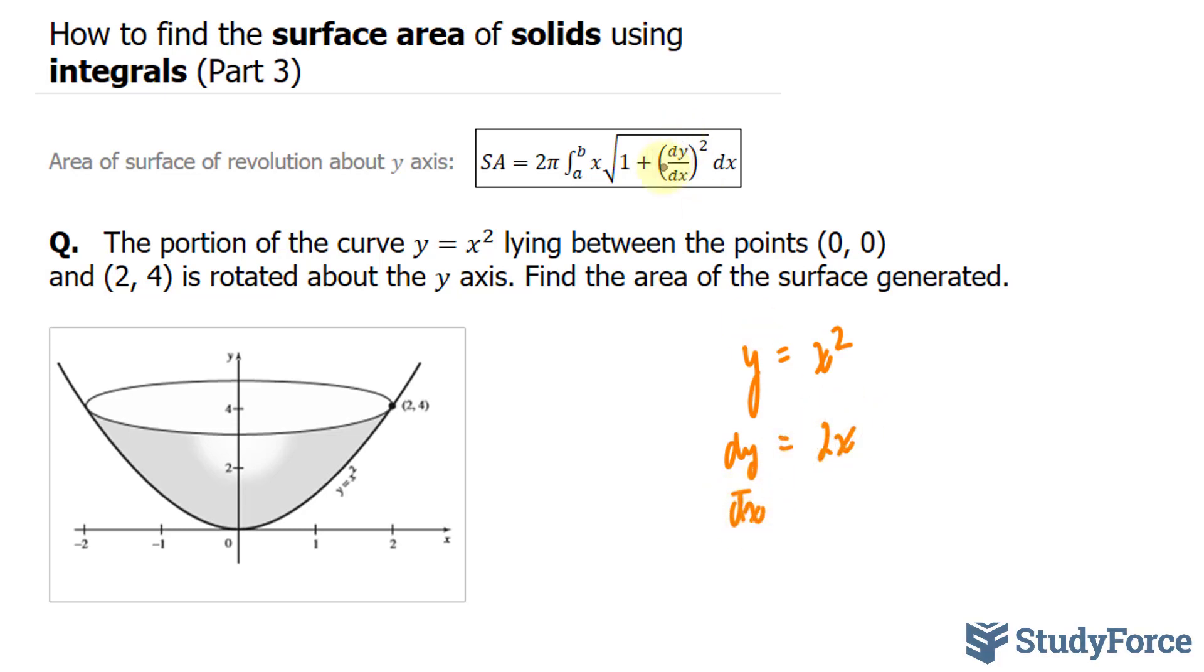So we can replace 2x into here and replace a with 0 and b with 2. So we have the surface area is equal to 2π times the integral between 0 and 2,